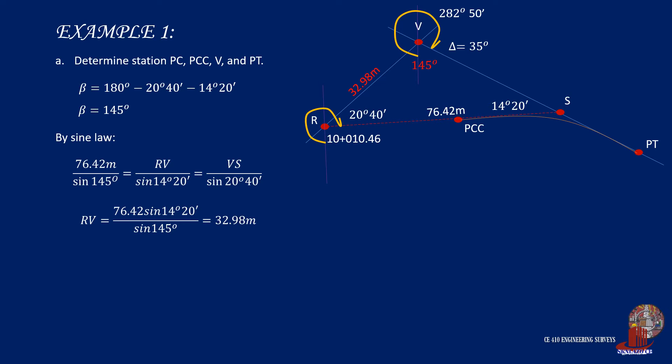Knowing RV, we can now determine the station of the vertex by adding length RV to station R, which would then give us station of V, 10 plus 43.44.